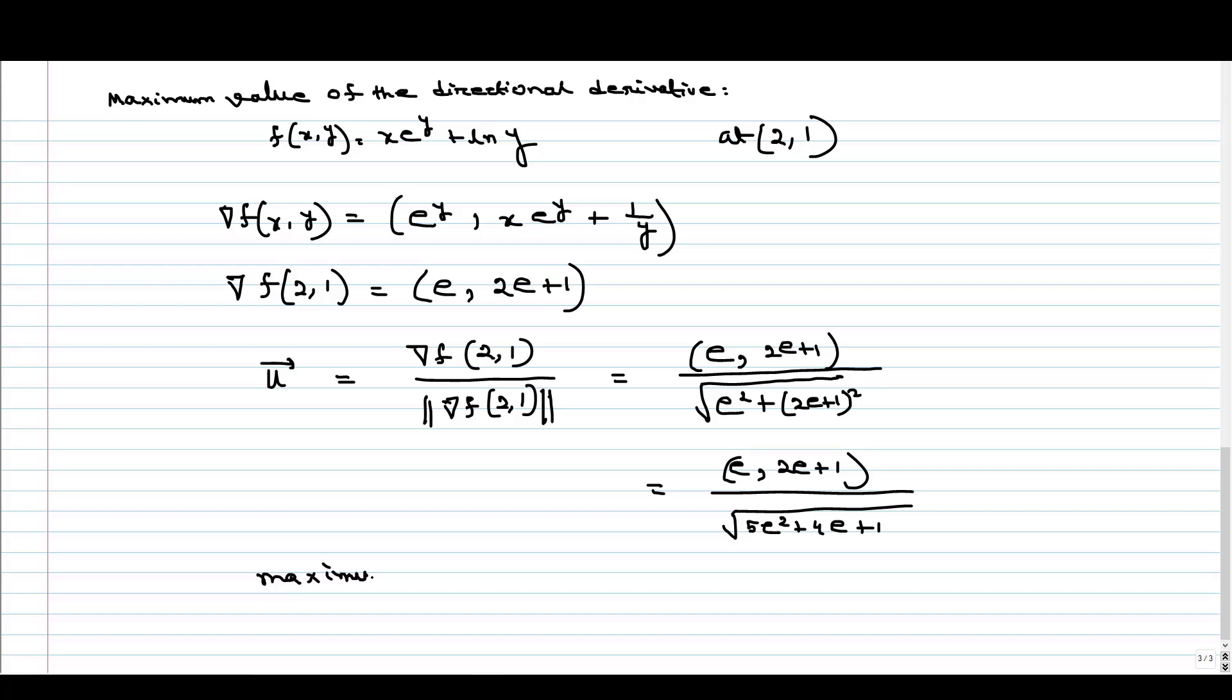the maximum value of the directional derivative at f(2,1), this is nothing but the norm of grad of f(2,1).